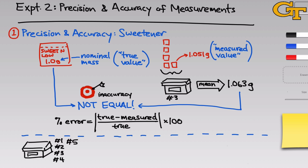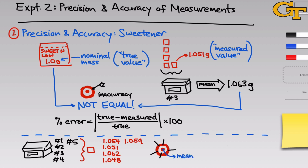In the next part of the experiment, we'll take five different balances — numbers 1 through 5 — and measure one packet of sweetener on each to get five different masses for the same packet. We might get something like 1.054, 1.051, etc. We're interested in both the percent error from the nominal mass and the spread of values among the five measurements. If we imagine a target where the center is the mean, each individual measurement is spread about that mean — and that spread is a measure of imprecision. The greater the spread, the less precise the data. Imprecision comes from random errors such as vibrations on the lab bench or the AC turning on — things we can't control.